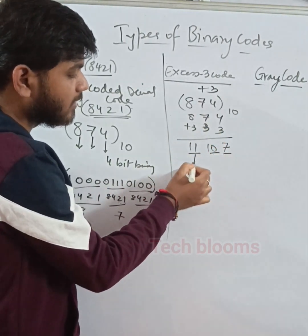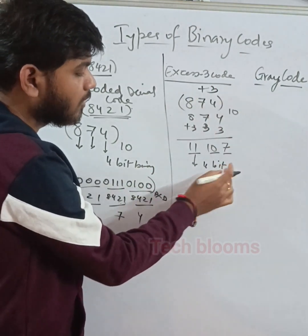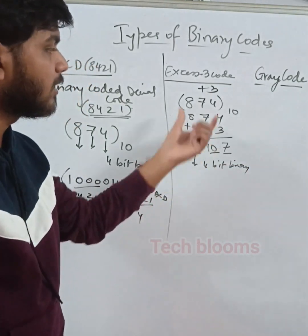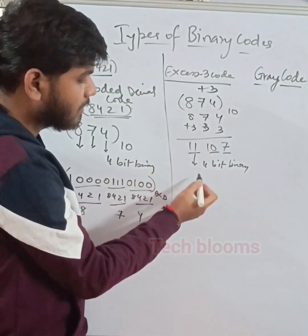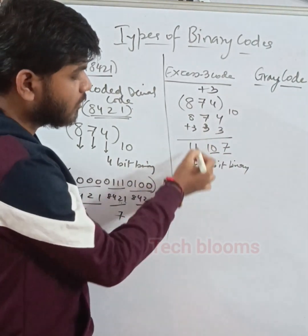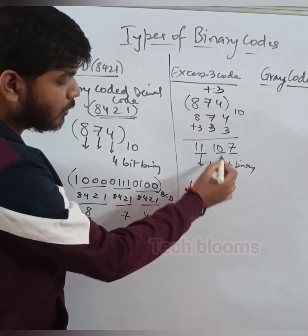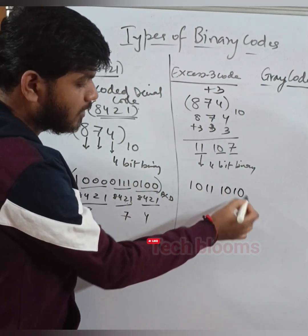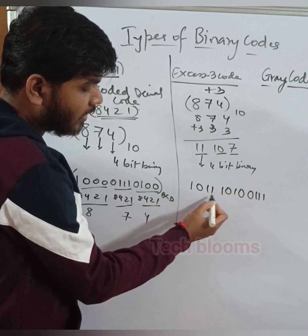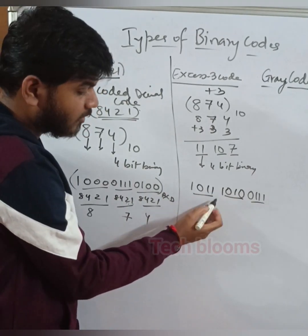Now each of these results you need to represent in 4-bit binary again, as XS-3 is also a 4-bit binary. Represent each digit of the decimal into a 4-bit binary number. You can write directly: 11 is 1011, 10 is 1010, and 7 is 0111. You can group and verify whether your binary bits are correct or not.